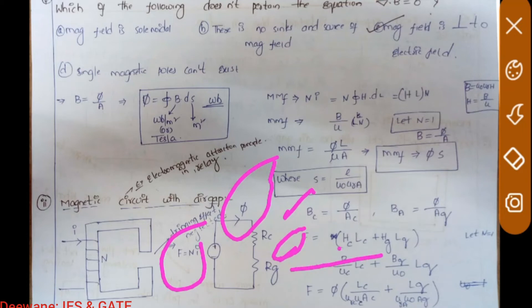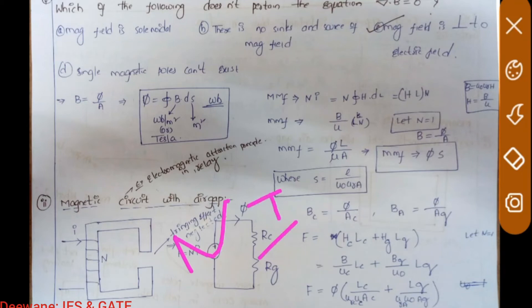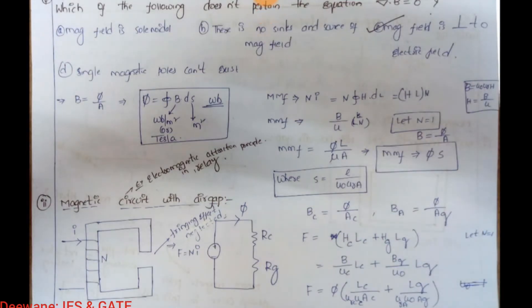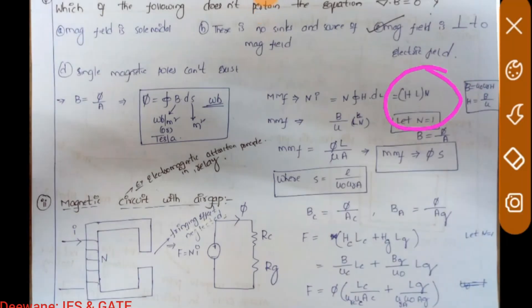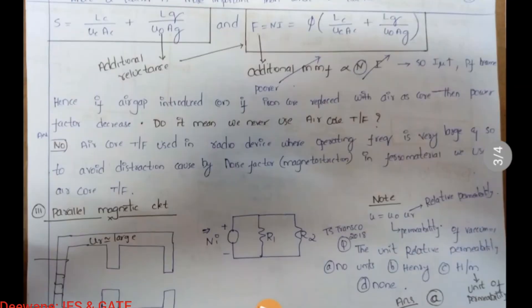MMF equals the sum of the H·l terms for the core and the air gap, since they are in series and the same flux flows through both. Substituting B/μ for H and phi/A for B, we get two reluctance terms — one for the core and one for the air gap. This gives the equivalent circuit with two reluctances in series.